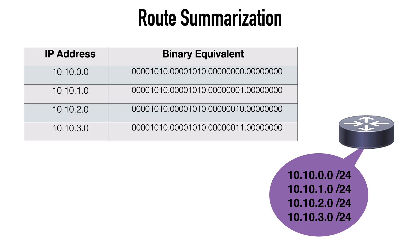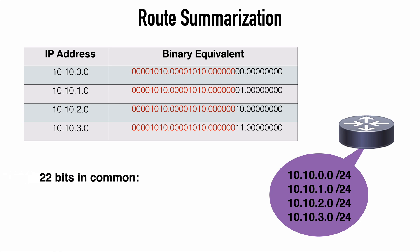Let's quickly review how we summarize a set of routes. Here we're working with four networks that we're going to look at summarizing: 10.10.0.0 through 10.10.3.0. The first thing we want to do is convert each of our network addresses to a binary value. You can see the binary equivalent for each of these IP addresses in a table here. What we want to do next is to look for the common bits — how many bits do these network addresses have that are exactly the same? In this case, we have 22 bits in common.